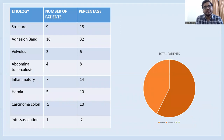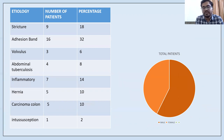Regarding etiology, stricture was seen in 9 patients, adhesion bands in 16, volvulus in 3, abdominal tuberculosis in 4, inflammatory causes in 7, hernia in 5, carcinoma colon in 5, and intussusception in 1 patient respectively as the etiology of obstruction.